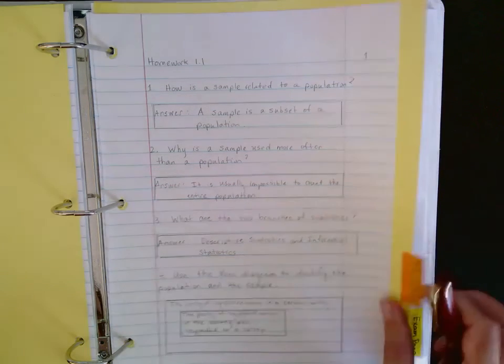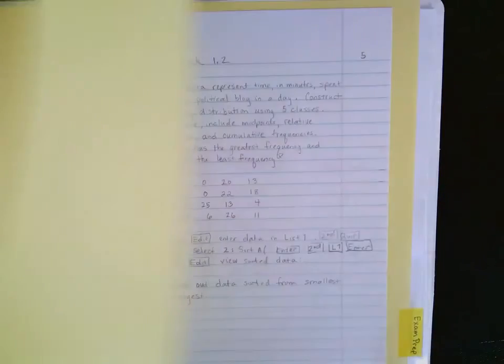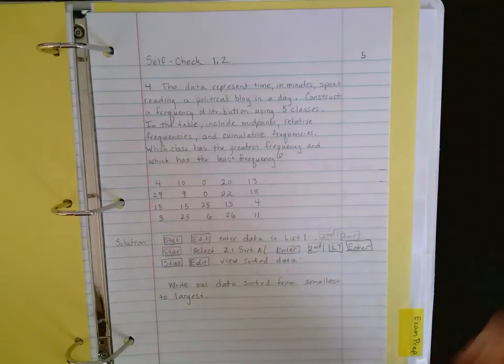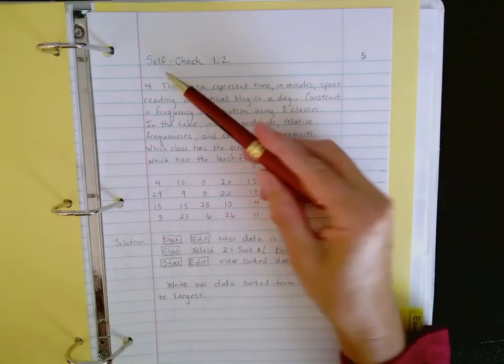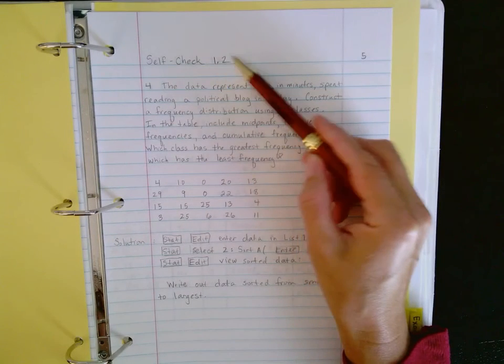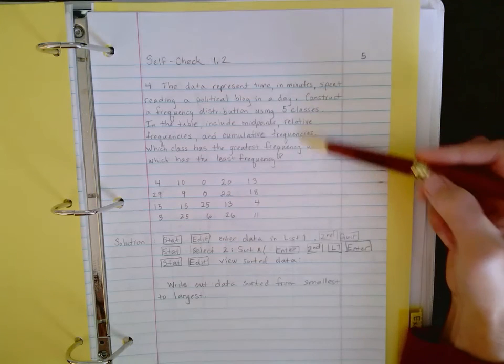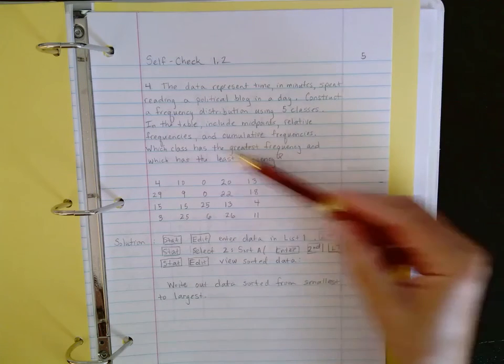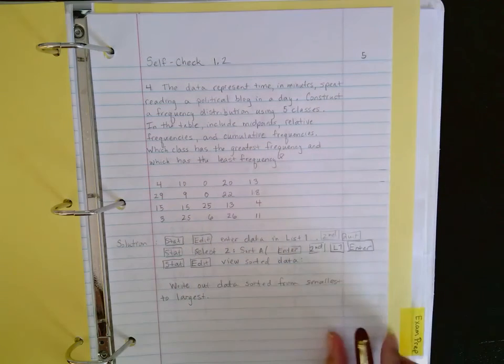So there's another section for self checks or this could be a section for quizzes. And again you can see that everything is clearly labeled what section it's from. The question is written out and then all the steps on how it was solved is also written out.